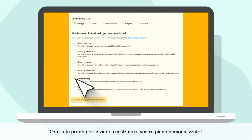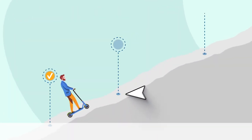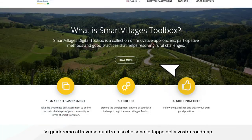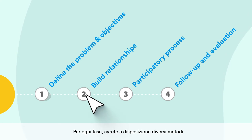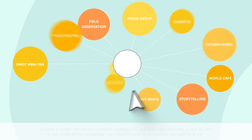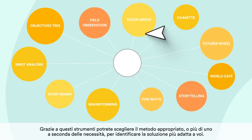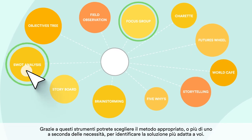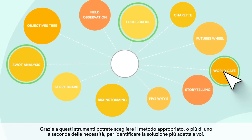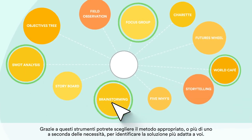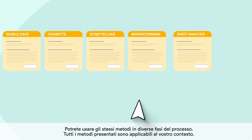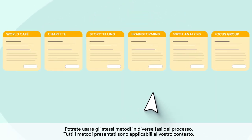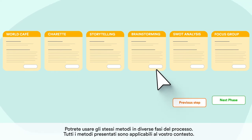Now you are ready to start building your custom plan. We will guide you through four phases that are the stages of your roadmap. For each phase, different methods are available. Thanks to these tools, you can choose the appropriate method or more than one as needed to identify your solution. You can use the same methods in different steps of the process. All methods presented are applicable in your use case.